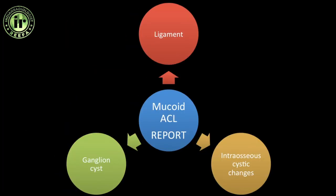In any mucoid ACL report you need to mention: the status of the ligament and the grade of degeneration; any ganglion cyst present and at what level; and intraosseous cystic changes.